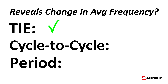Okay, so what about cycle-to-cycle jitter? No — cycle-to-cycle jitter cannot reveal a change in the average frequency of a clock because it only applies to adjacent, neighboring clock periods. As we demonstrated in the previous video, video number 16 in this series, the clock frequency can drift or even double while the cycle-to-cycle jitter remains unchanged.